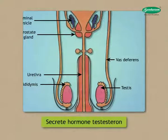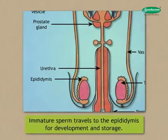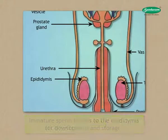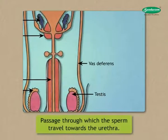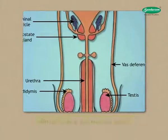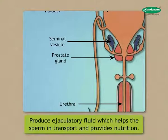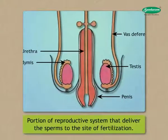Testes secrete the hormone testosterone, which brings about changes in boys during puberty. Immature sperm travel to the epididymis for development and storage. The vas deferens is a passage through which sperm travel towards the urethra. The seminal vesicle and prostate glands produce ejaculatory fluid which helps the sperm in transport and provides nutrition.